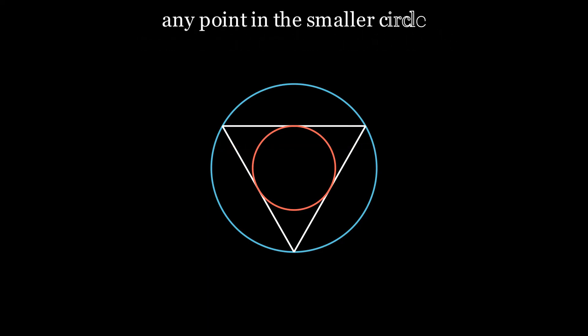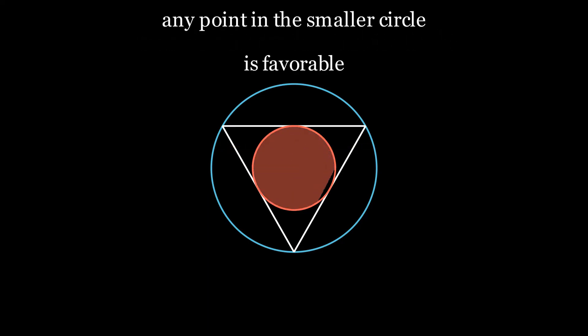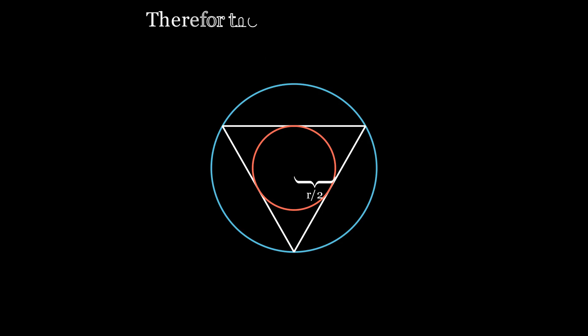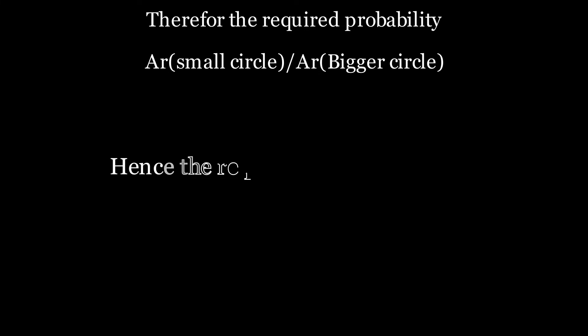Any point inside the smaller circle is a favorable point, which means we can take the ratio of the area of the two circles. The required probability becomes area of the smaller circle divided by the area of the larger circle, and hence the required probability is 1 by 4.